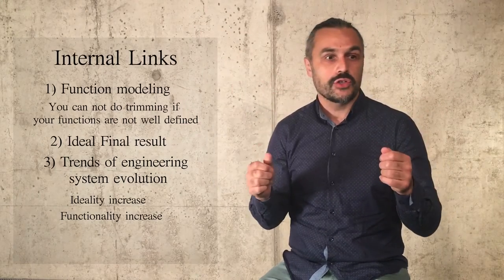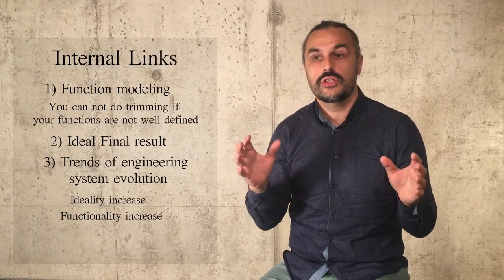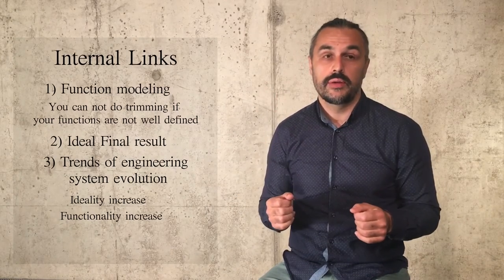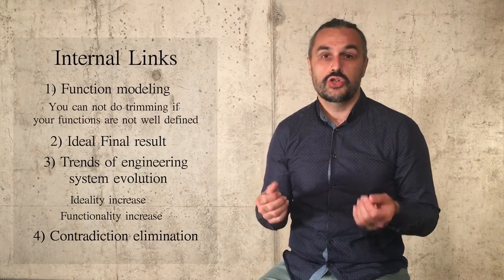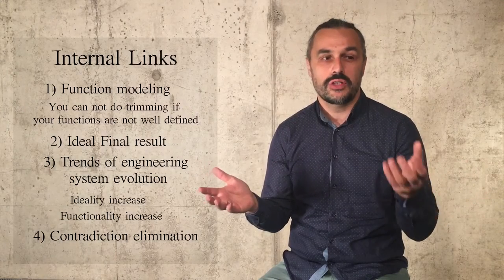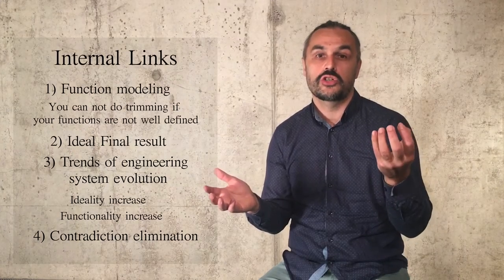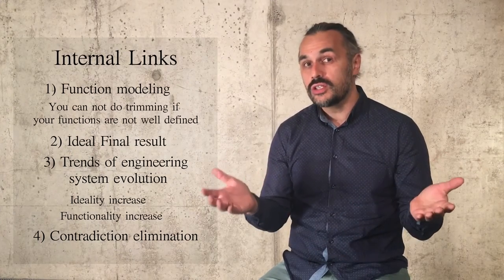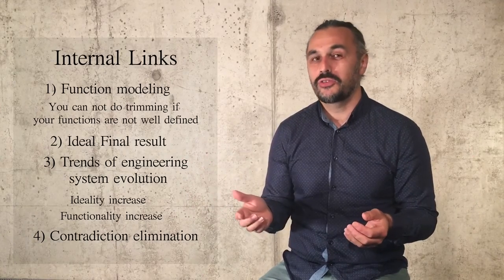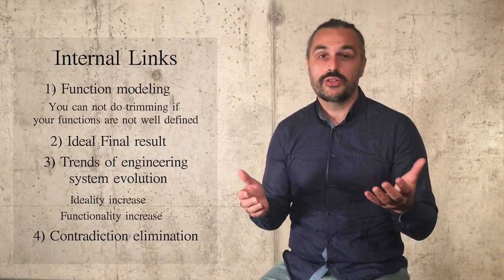This part of system evolution can also be associated with trimming. And then there is contradiction elimination. Typically, when we eliminate some element, the contradiction could be killed as well. Because if the element was the source of a harmful action or the recipient of a harmful action, it is natural to trim it — then we don't need it anymore, we don't have it, and there is no contradiction. No element, no problem.